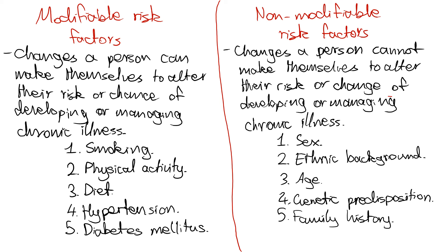So in this quick video, we've explored the concepts of modifiable and non-modifiable risk factors. Modifiable risk factors are changes to one's life that a patient can make, and they can control these factors to alter their risk of developing or managing a chronic illness effectively. They include things such as smoking, physical activity, diet, or even conditions they can manage effectively to prevent others, such as hypertension and diabetes mellitus. Non-modifiable risk factors are changes a person cannot make themselves because they're out of their control, and they include sex, ethnic background, age, genetic predisposition, and family history.